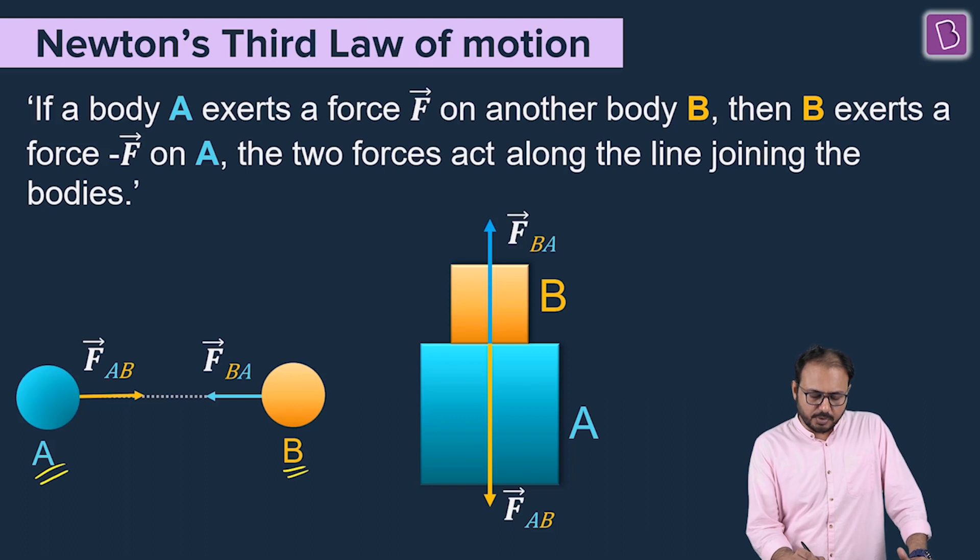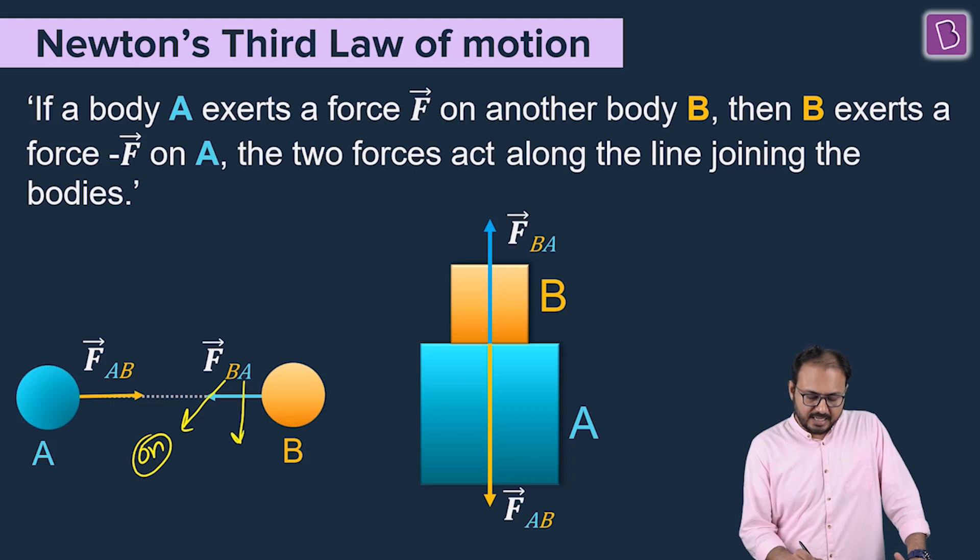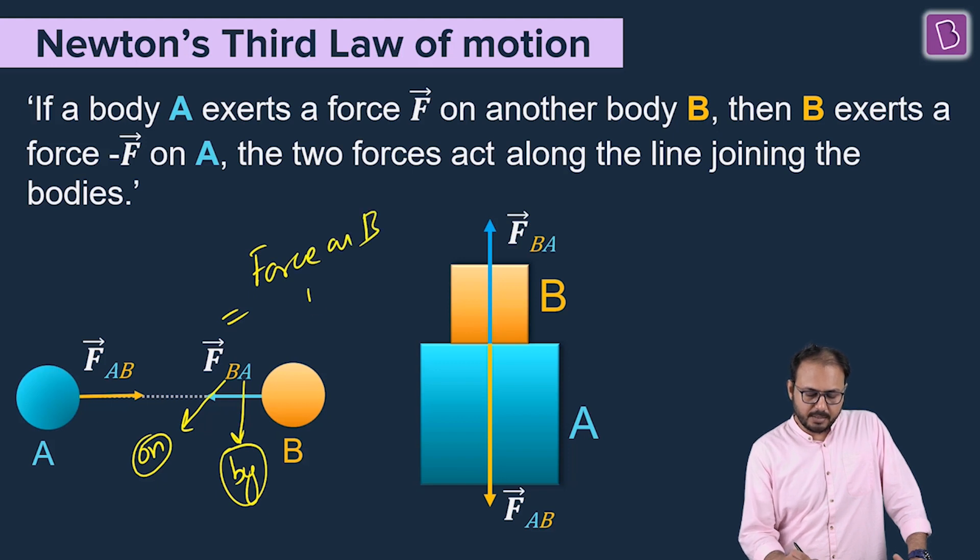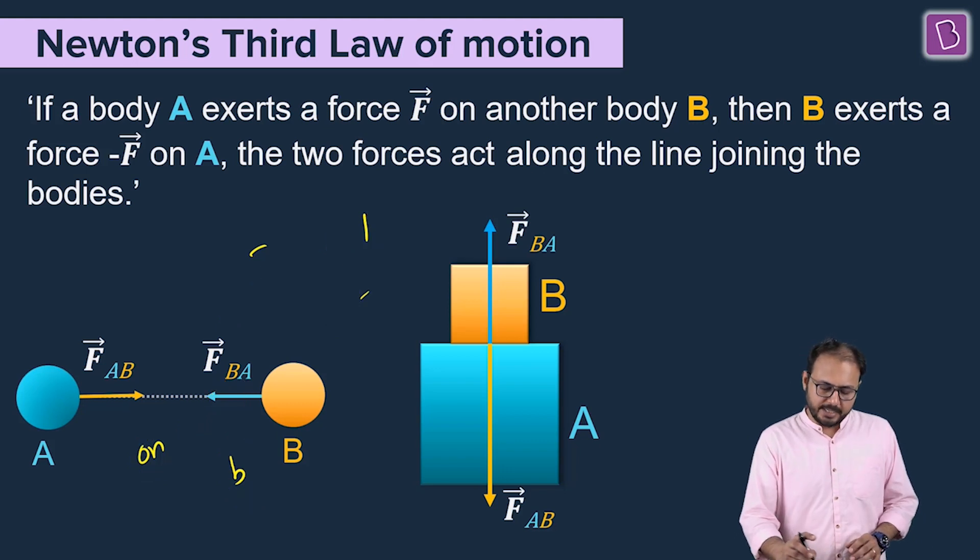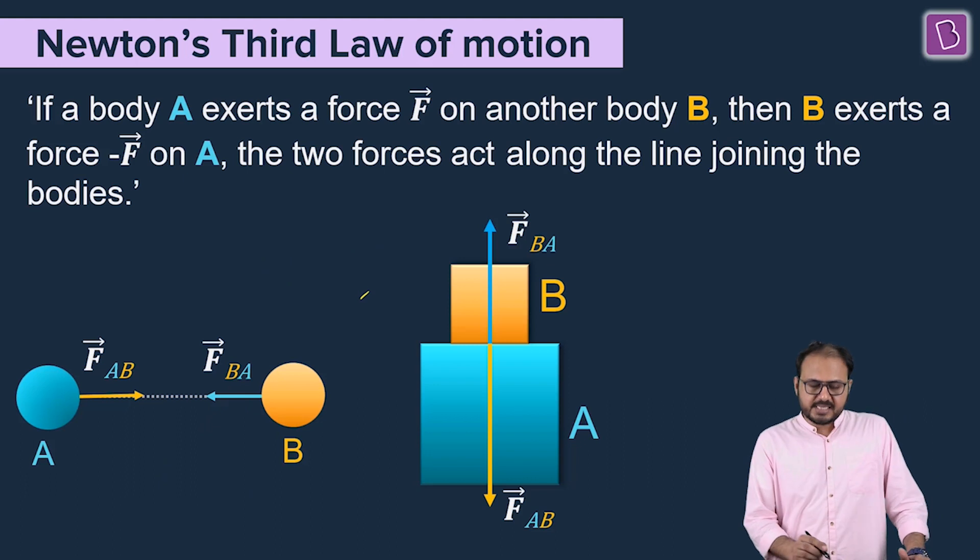Let's say A exerts a force on B. We'll call it FBA. Let me explain to you the subscript meaning. There are two letters in the subscript B and A. The first letter B describes on and the second letter is by. So this is force on B by A. The first letter of the subscript is the recipient, on. The second letter of the subscript is the source. So FBA is force on B by A. So A exerts a force on B, B exerts a force on A.